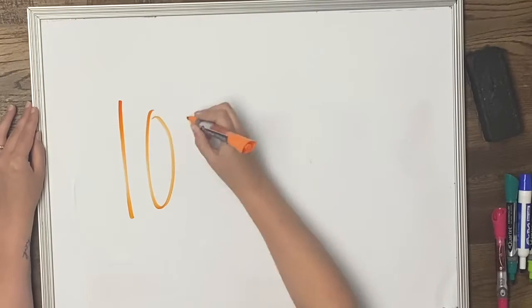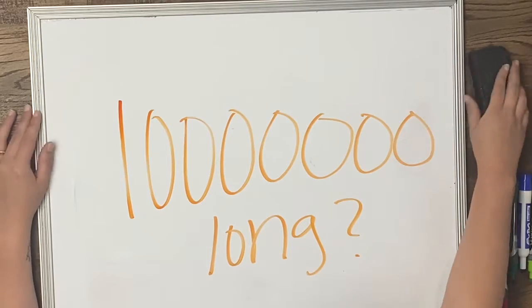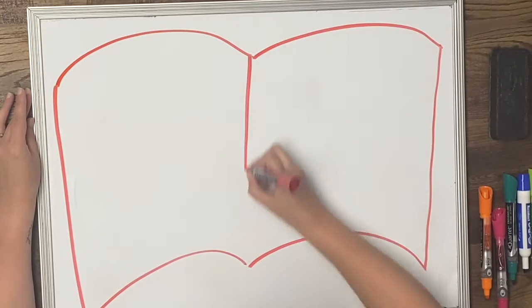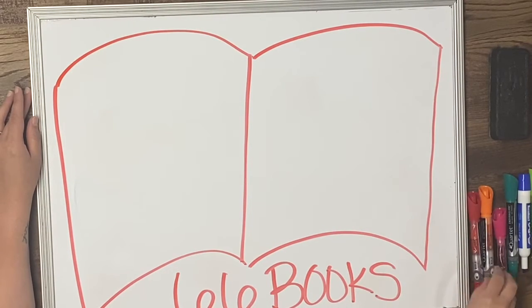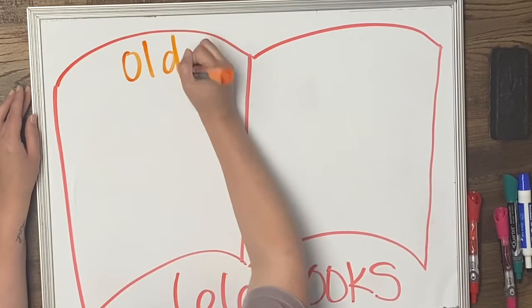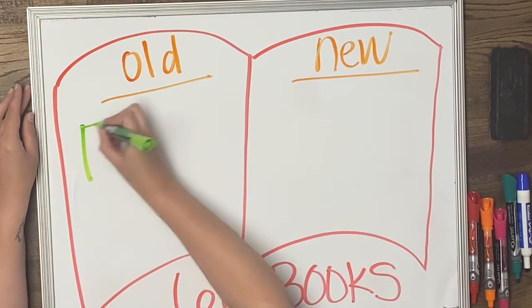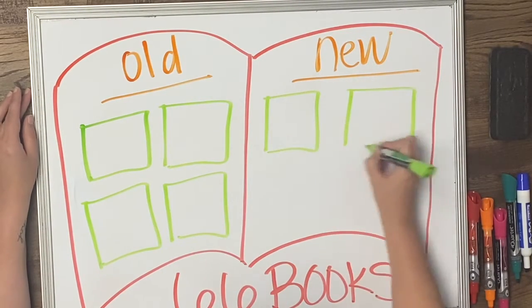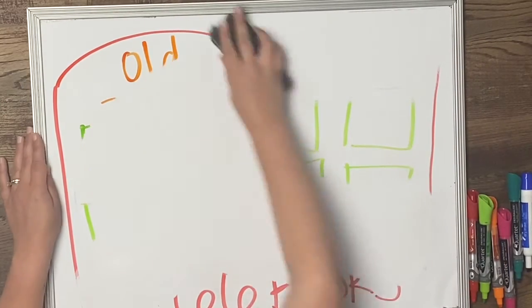But why does it take 1,100 pages to tell that story? Why is the Bible so long? Well, the short answer to that is because it's full of a lot of stuff. The Bible is made up of 66 different books that all come together to form one Bible. The books are divided between the Old and the New Testament, and each of those sections are divided into four other different categories. So there's a lot in there. It's not just one simple story. It's a lot of stories that work together.